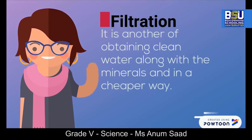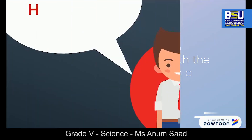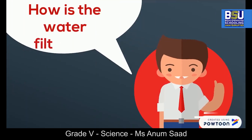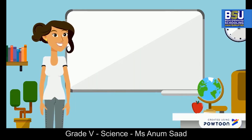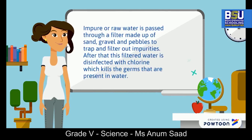Filtration is another way of obtaining clean water along with the minerals, and in a cheaper way. Impure or raw water is passed through a filter made up of sand, gravel, and pebbles to trap and filter out impurities. After that, this filtered water is disinfected with chlorine, which kills the germs that are present in water.